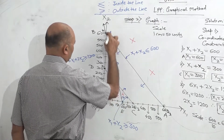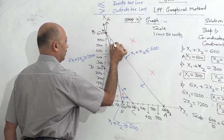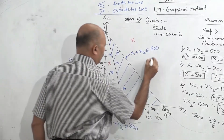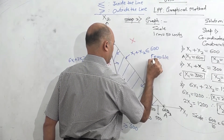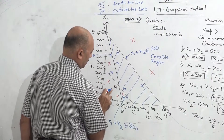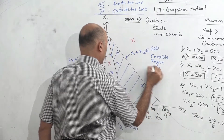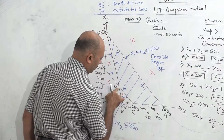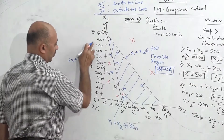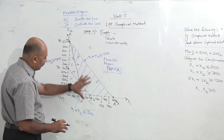What remains is the feasible region. You can see it is bounded by points B, F, C, A. From B we go to F, from F we go to C, and from C we go to A. This is our feasible region — B, F, C, A. All other areas inside and outside are cancelled. Our graph is ready and our feasible region has been found.